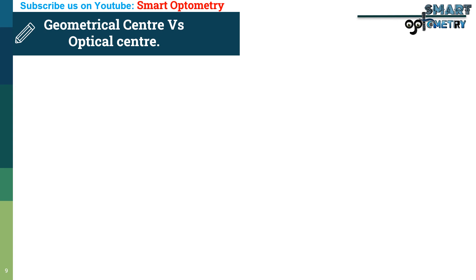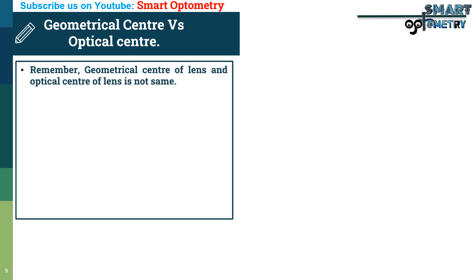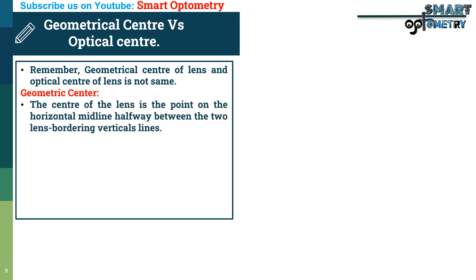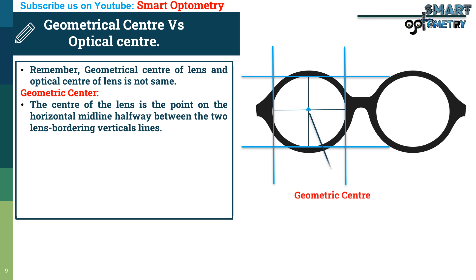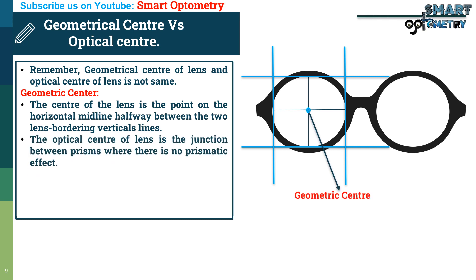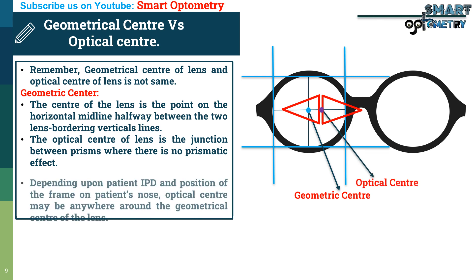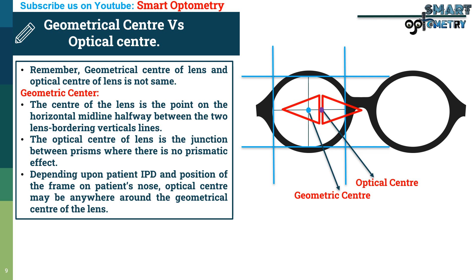Geometrical center versus optical center. Remember, the geometrical center of the lens and the optical center of the lens are not the same. The geometrical center is the point on the horizontal midline halfway between the two lens bordering vertical lines. The optical center is the junction between prisms where there is no prismatic effect. Depending upon the patient's IPD and position of the frame on the patient's nose, the optical center may be anywhere around the geometrical center of the lens.